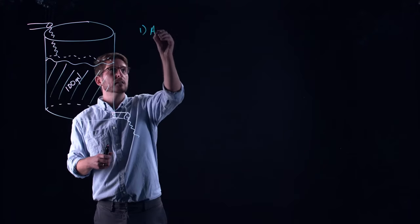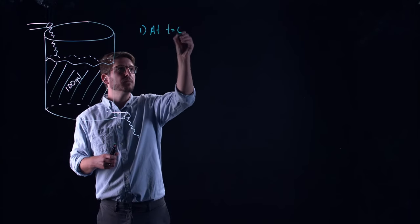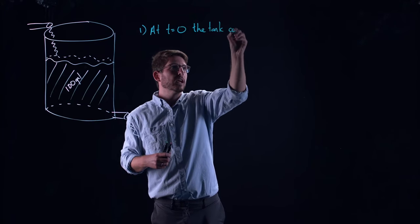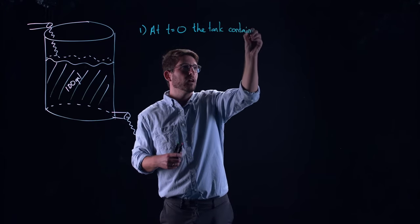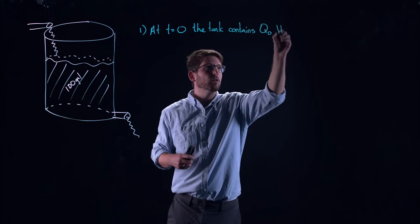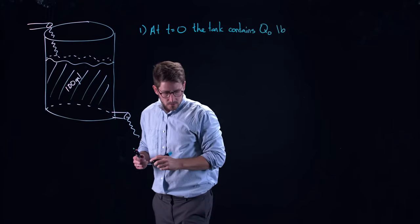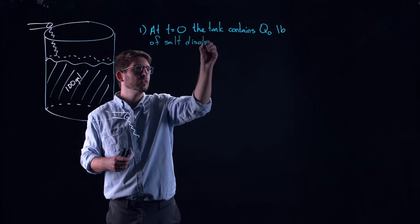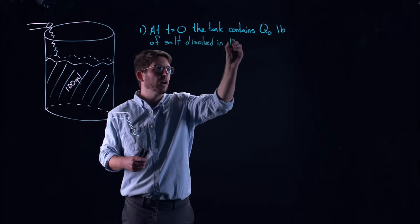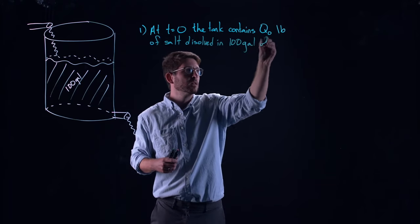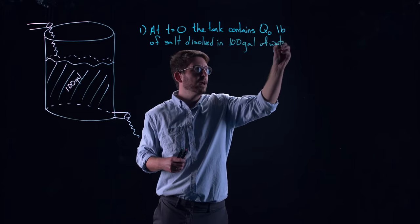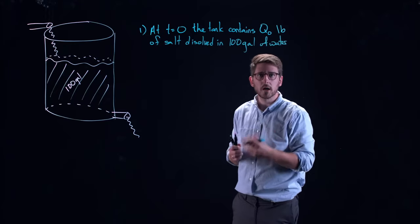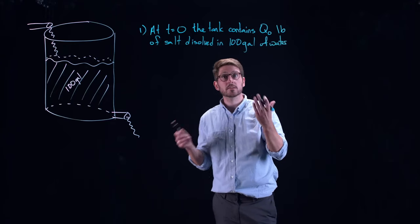So the first thing is that at time zero, the tank contains, let's call it Q naught pounds of salt dissolved in a hundred gallons of water. So inside of that tank, there's a hundred gallons of water with Q zero or Q naught pounds of salt that's dissolved into it.